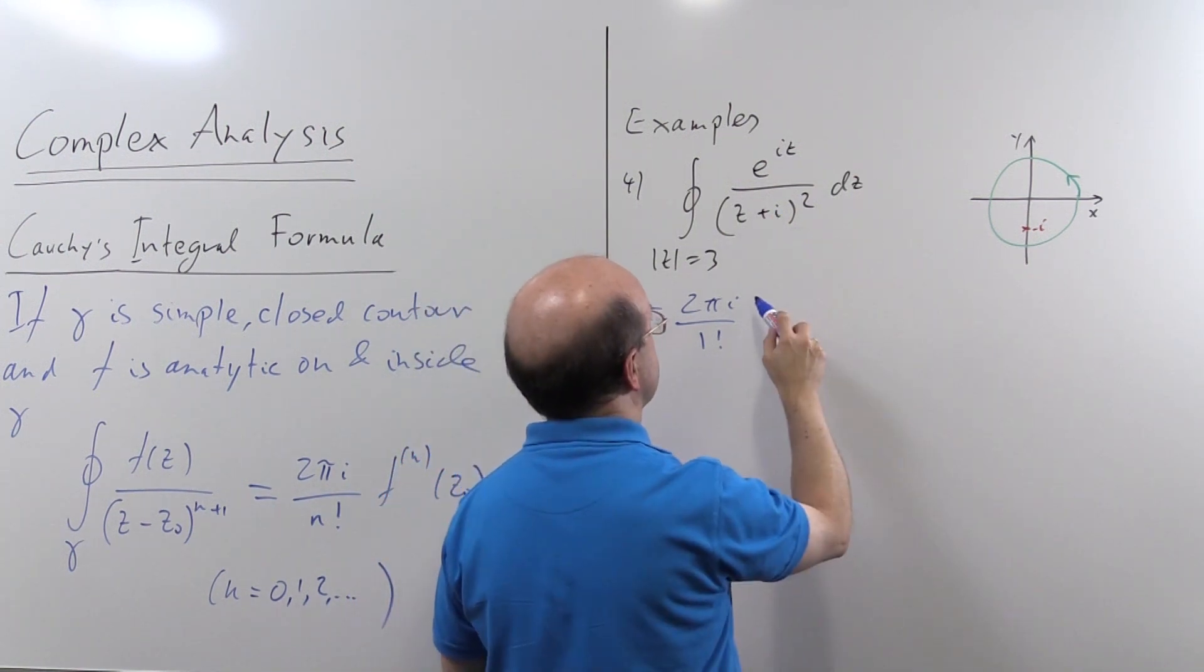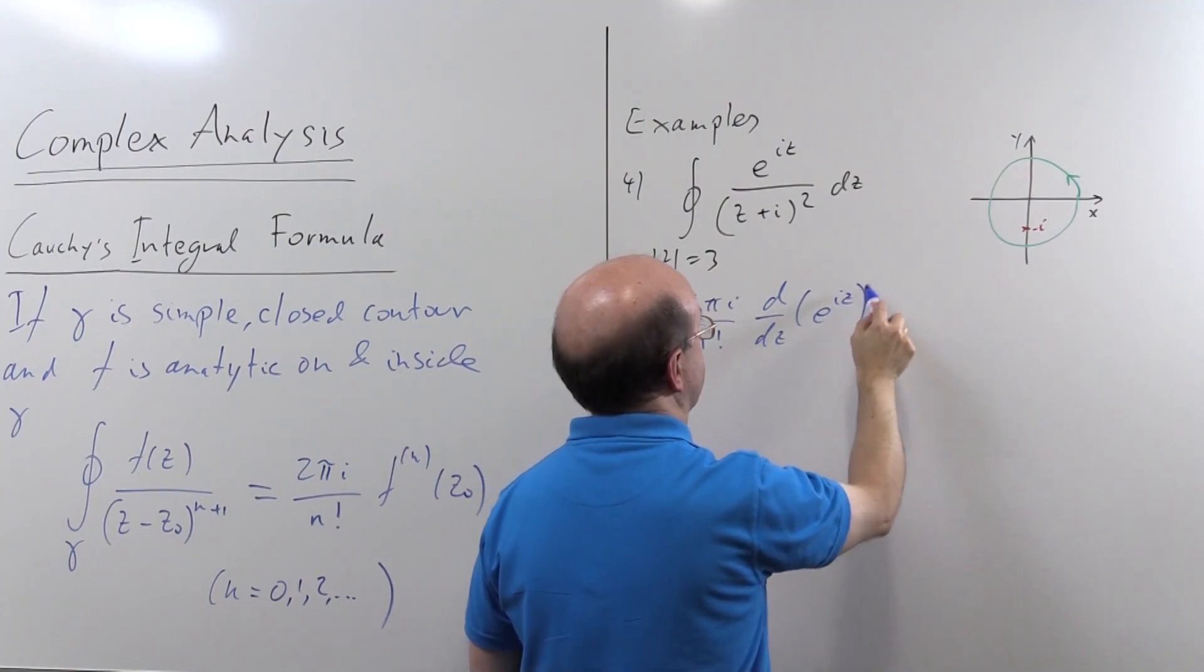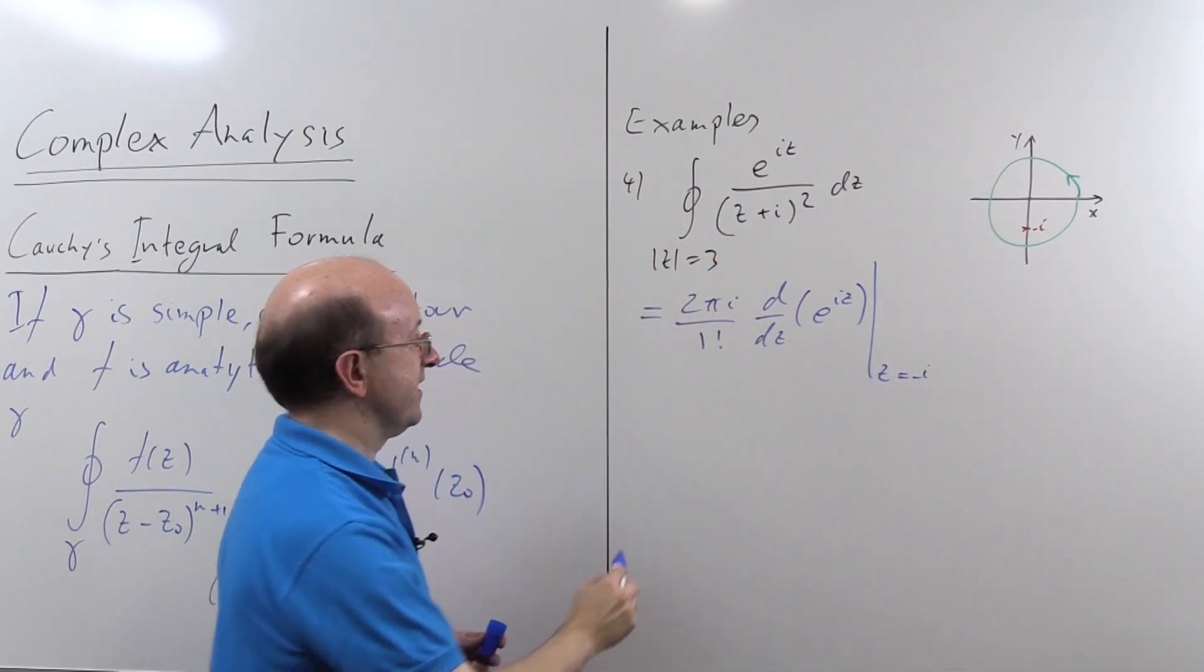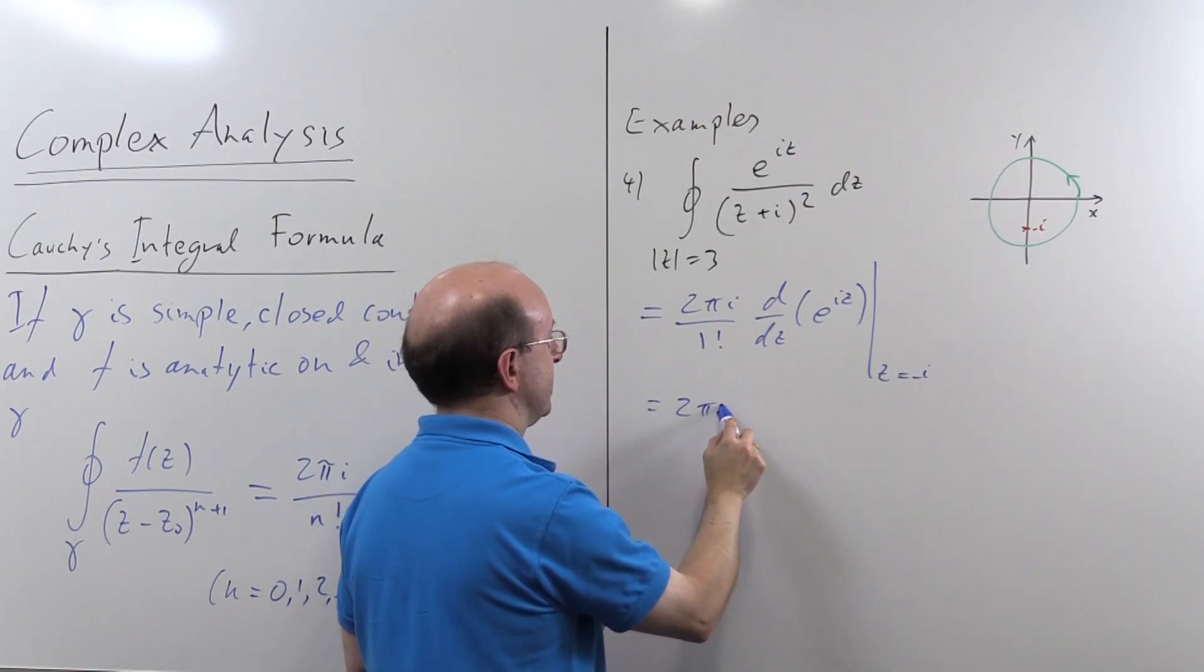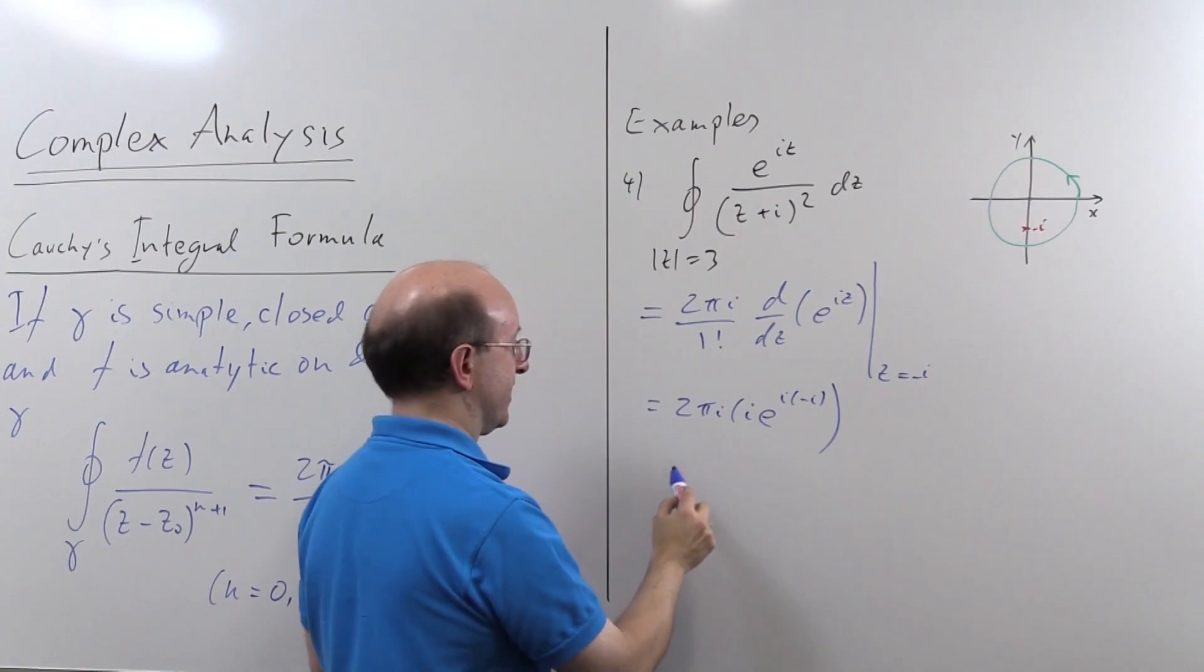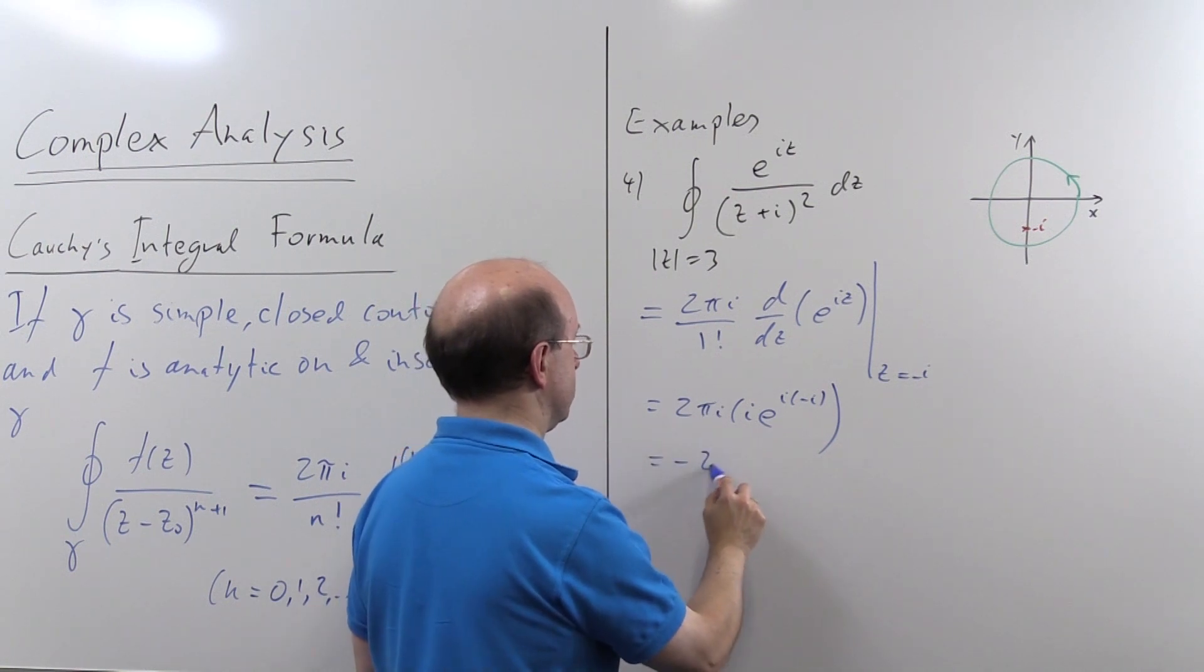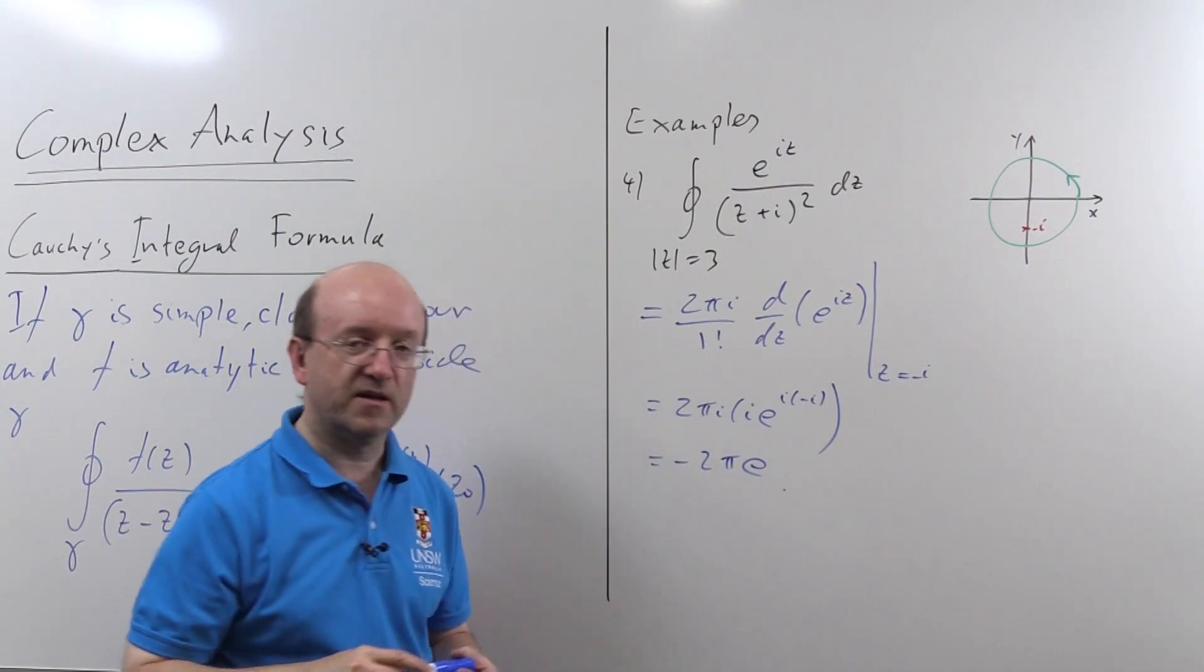Well, one factorial is 1, so that's not a problem. So we get 2 pi i. Well, the derivative of e to the iz is just i e to the iz, so it's i e to the i times minus i, which we meant before. That's just e, so I'm going to get minus 2 pi e. And that's my answer.